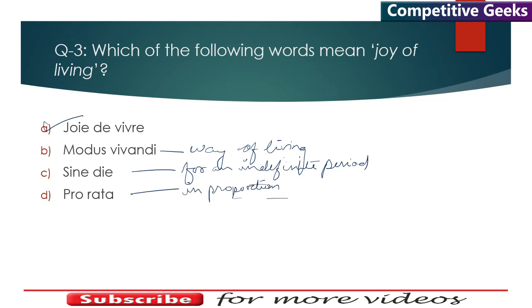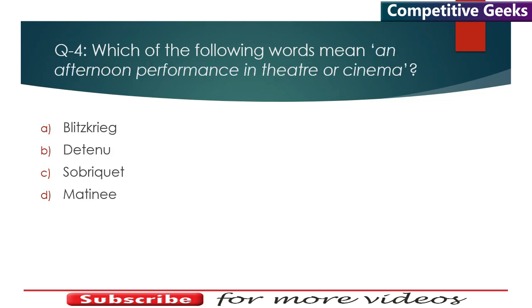Question 4: Which of the following words mean 'an afternoon performance in theatre or cinema'? The answer is Matinee, which is a common word. Blitzkrieg means lightning attack or surprise attack with great speed.